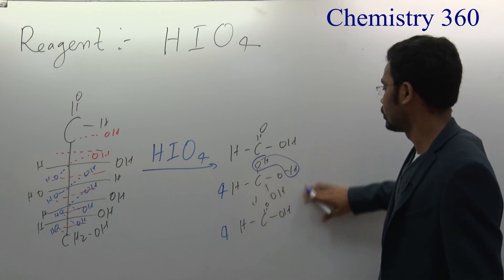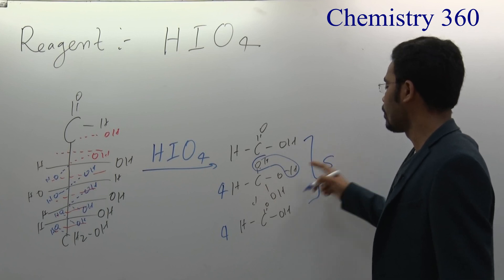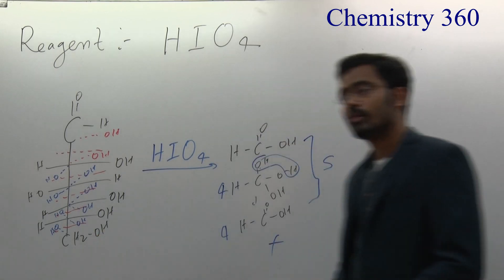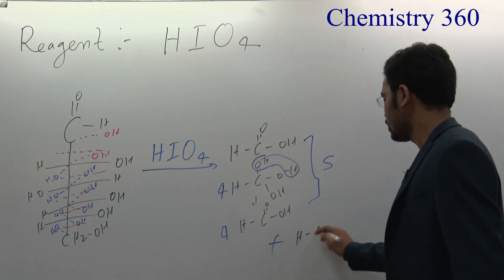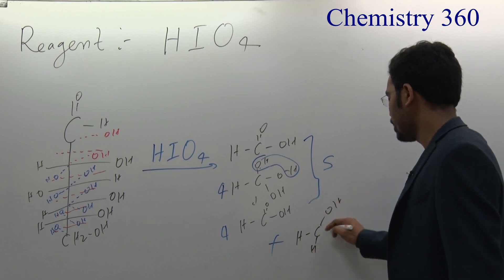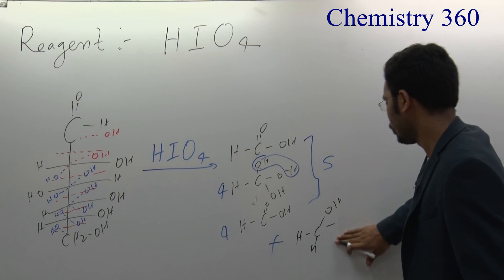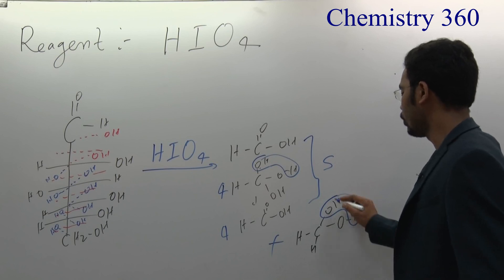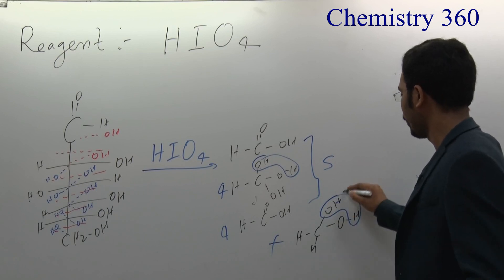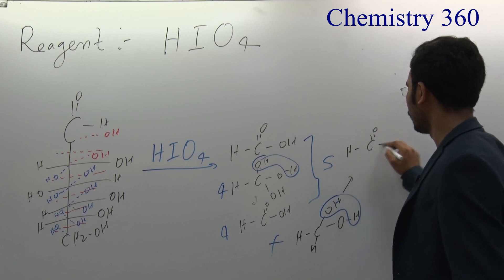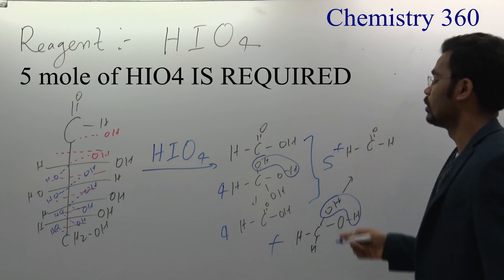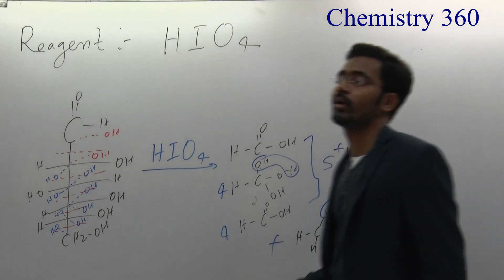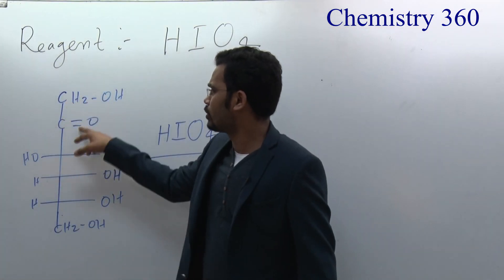Total: 5 moles of formic acid. Plus, from the terminal CH2 carbon which has 2 OH groups (H, H, OH, OH), remove one water molecule and it forms H-C(=O)-H — formaldehyde. So 5 moles of formic acid and 1 mole of formaldehyde are the products.